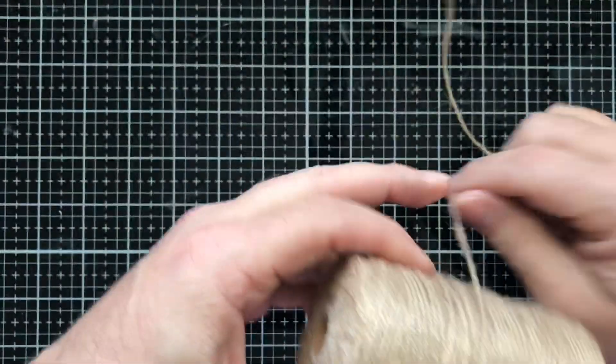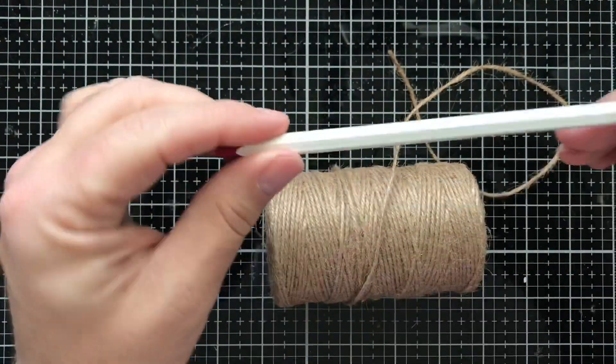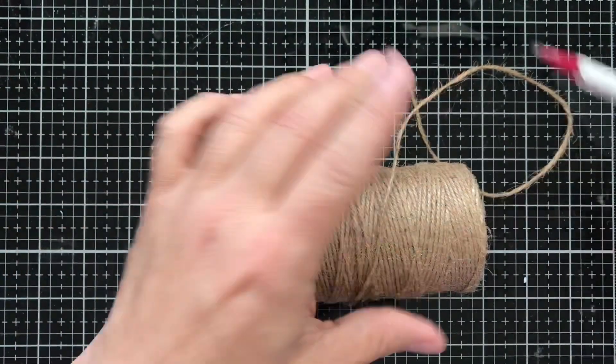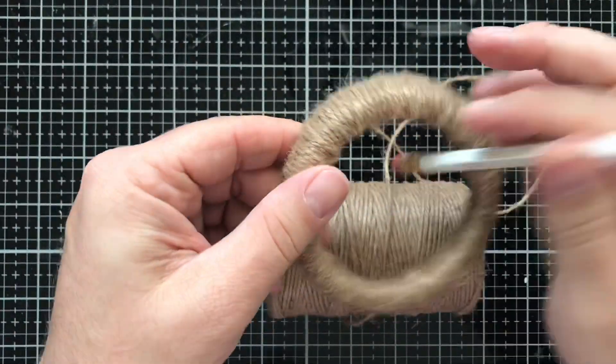So what I did is after I wrapped it around 30 times, I actually wrapped it on a pencil and the pencil after you wrap it goes easily in and out of your mason jar lids.